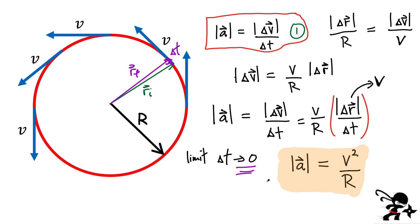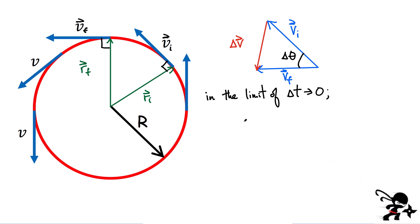We're not quite done — we also want to look at the direction of the acceleration. Let's think about the direction. I've drawn my initial and final velocity for the two times. Since both lengths of v initial and v final are the same, we have an isosceles triangle, which means both of these base angles have to be the same. Let's call it angle alpha.